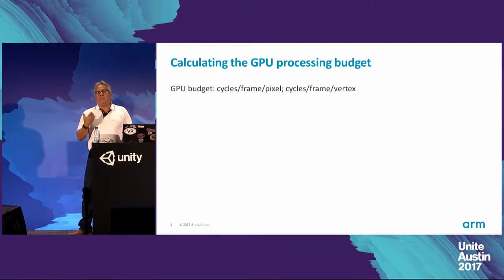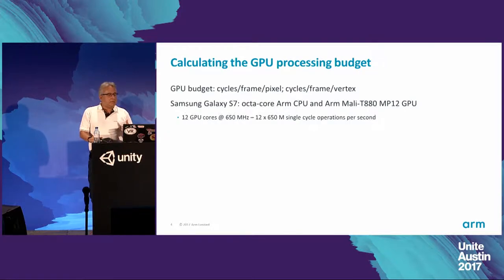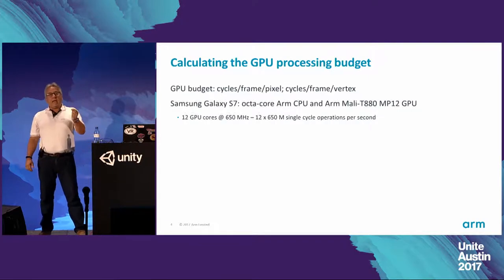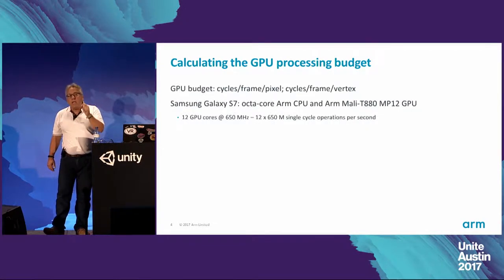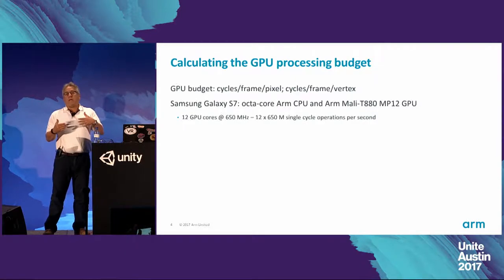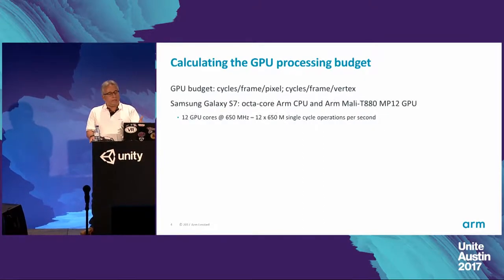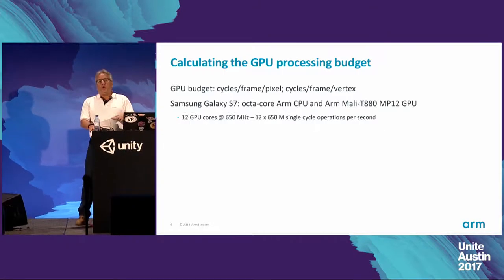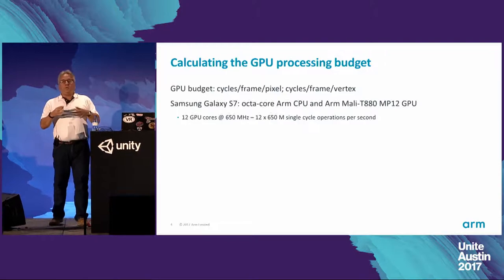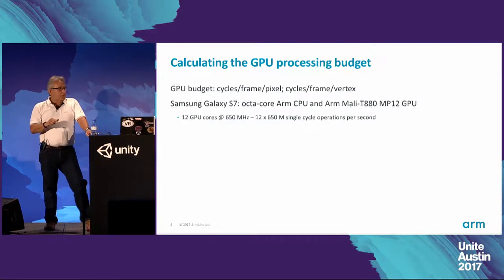So what is the GPU budget? The GPU is a processor which runs at some operating frequency. Take, for example, the Samsung Galaxy S7, which comes with our Mali GPU with 12 cores. Each core runs at 650 megahertz, meaning each core can perform 650 million single-cycle operations, or half that for two-cycle operations. GPU operations consume one cycle or more — never less. Multiplying by 12 gives the total cycles the GPU can perform in one second, but we are interested in cycles per frame.